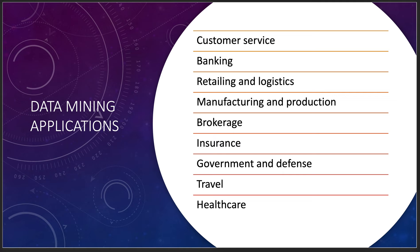Travel is equally interesting. Expedia and Travelocity know where people are going. If I book a trip to Saudi Arabia, then Expedia knows I'm going there. How many other people are going to Saudi Arabia in that time frame? That data helps airlines with capacity planning based on actual bookings — a neat data mining application that helps travel agencies, airlines, and countries understand where visitors want to go and why.